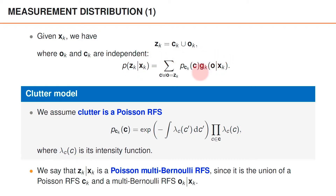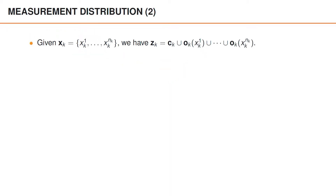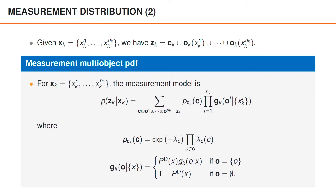In this expression for the measurement model, we are essentially using the convolution formula two times. An easy way to simplify the expression and eliminate the need for using the convolution formula twice is to note that given xk, the set of measurements is the union of nk plus 1 independent sets, namely the clutter measurements and the nk different sets of object measurements. This means that we can directly use the convolution formula to express the multi-object PDF of zk given xk, getting a summation over all disjoint sets c and o1 to onk whose union is zk, of the product of pck of c times a product of gk of oi given xki over all objects.